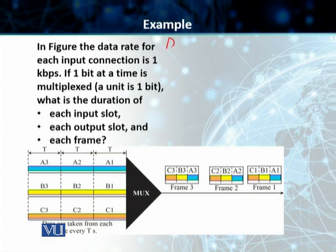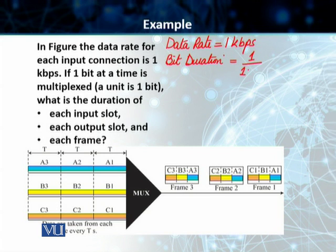Students, we are told that our data rate is 1 kilobits per second. Now, students, this essentially means that our bit duration is equal to 1 divided by 1,000 seconds and this is equal to 1 millisecond. Students, our duration of the input slot will be equal to our bit duration.